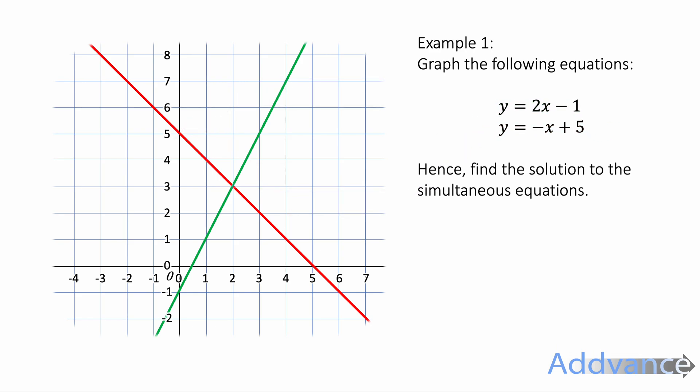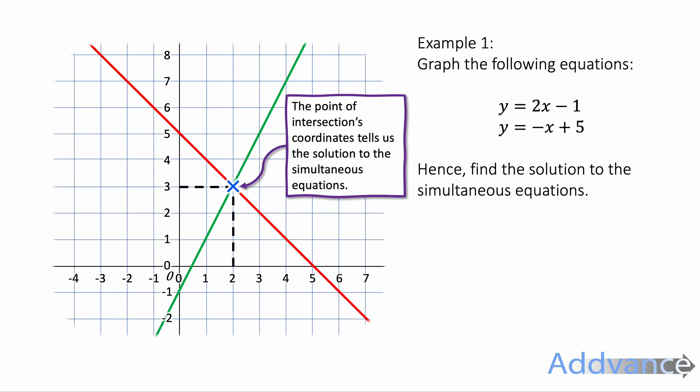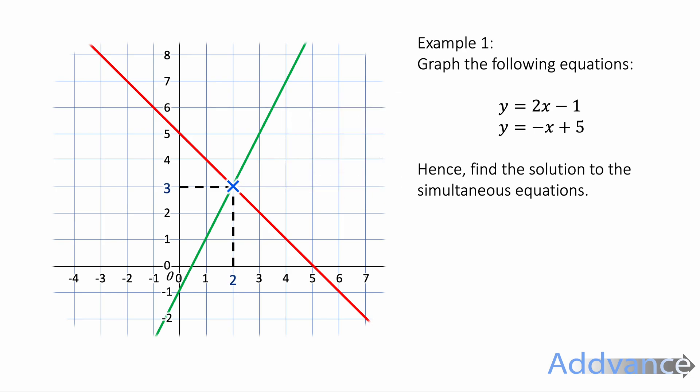Now you should see that these two lines cross over and they've got a point of intersection here. The coordinates of that point of intersection tell us the solution to the simultaneous equations. The coordinate is 2, 3. So that means the solution is x equals 2 and y equals 3. That is the solution to the simultaneous equations.